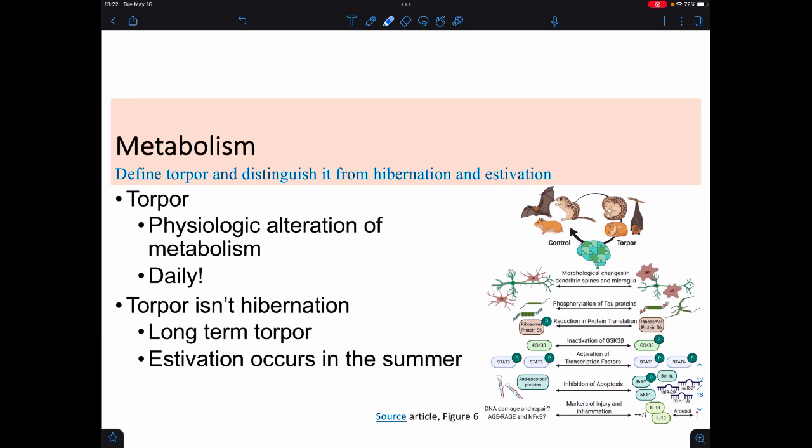We also have periods where we just shut everything down. Torpor is a physiologic state of altered metabolism, and this actually happens to mammals, especially us, daily. And you say, well, that doesn't happen to us, and the answer is sure it does. If you actually look at your body temperature, it changes as you try and go to sleep. You actually lower your body temperature. Have you not noticed that when it's really hot outside, it's really hard for you to fall asleep? And that's because you can't change your body temperature to make it so you can sleep.